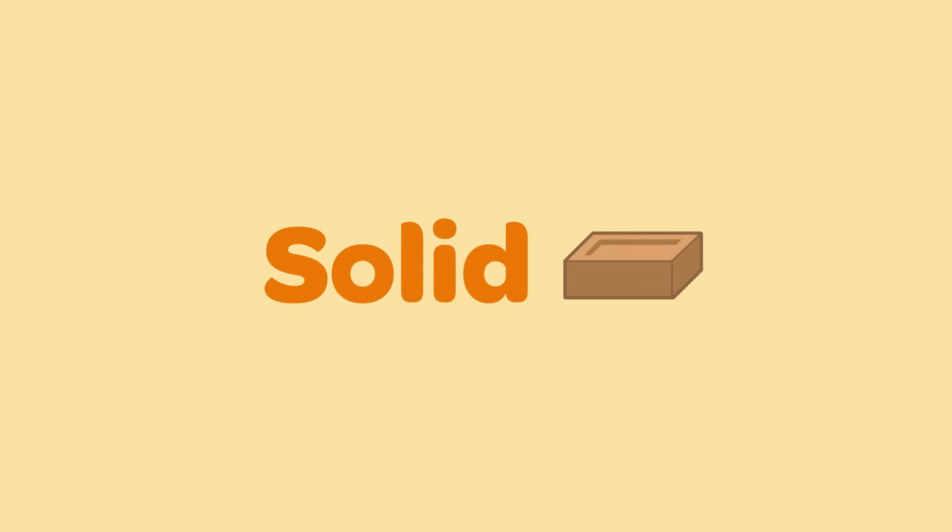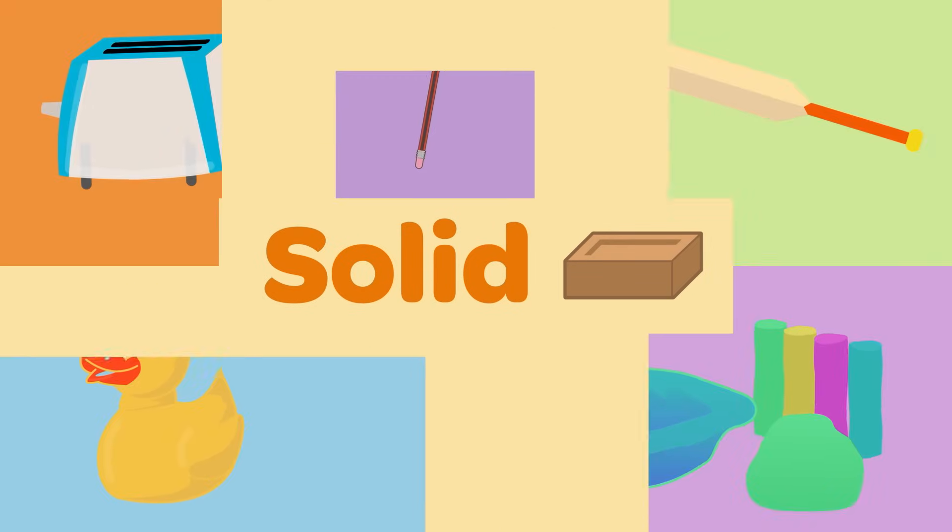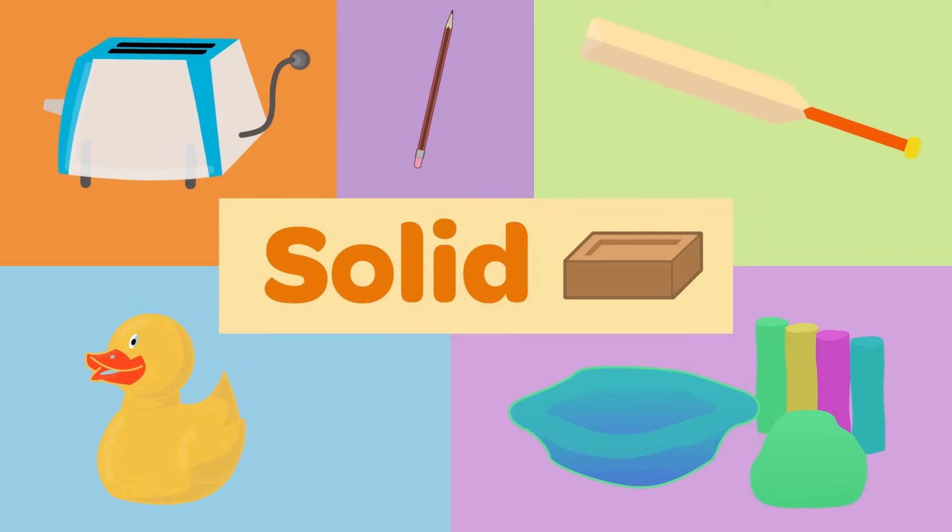A solid is something that holds its shape. Solids can be hard like a toaster, a pencil, or a cricket bat, or they can be soft like a rubber toy or a piece of clay.